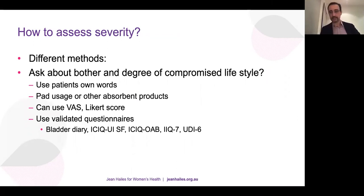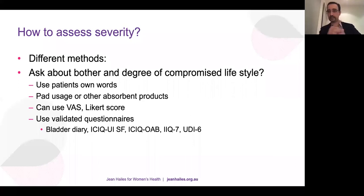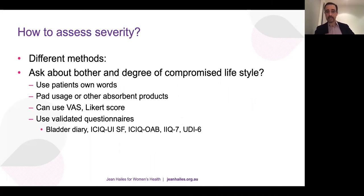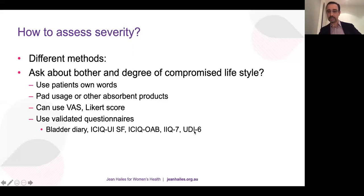To assess severity, ask the woman about the degree of bother and compromise using patient-owned words. You can use the number of pads, a visual analogue scale from 0 to 10, or Likert scores. Validated questionnaires include the bladder diary; ICIQ-UI SF (International Consultation on Incontinence Questionnaire, Urinary Incontinence Short Form); ICIQ-OAB for overactive bladder; IIQ (Incontinence Impact Questionnaire); and the Urogenital Distress Inventory. These abbreviated versions are useful for assessing improvement in severity or bother after treatment.